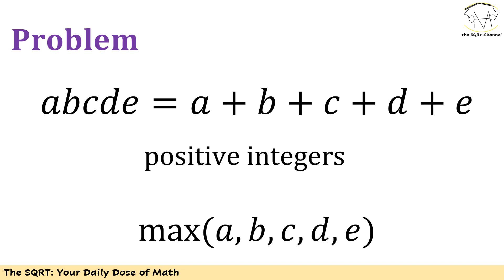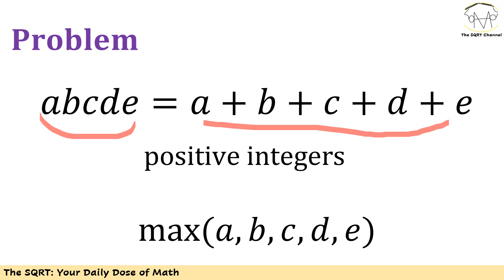Hello everyone, welcome to the sqrt channel. In this video we are going to talk about a problem from algebra — specifically from training the US International Mathematics Olympiad team. The problem is: a·b·c·d·e equals a+b+c+d+e, where all values are positive integers, and we are looking to find the maximum value among a, b, c, d, and e. Before moving forward, pause the video to think about this problem.